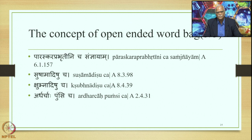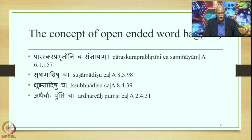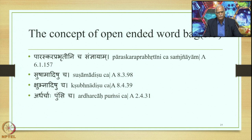We have similar Akriti Ganas like Paraskara Prabhruti Nicha Saudhnyayam in 6.1.57, Sushama Deshucha in 8.3.98, Shubna Deshucha in 8.4.39, and Ardhar Chahapunsicha in 2.4.31, all dealing with different aspects. For example, Ardhar Chahapunsicha deals with the gender of the compound and clubs together similar and other types of words. Shubna Deshucha is the bag of exceptions where the retroflex does not happen, while Sharma Deshucha is the bag of words where the retroflex in the form of Sha happens.